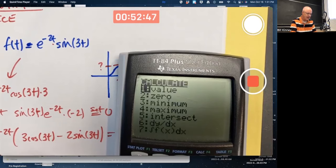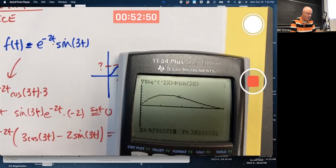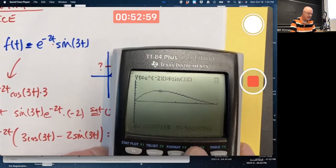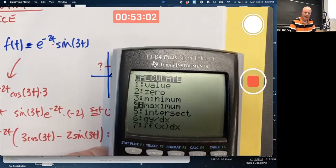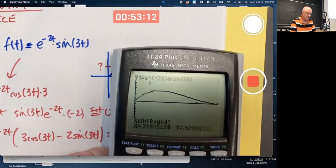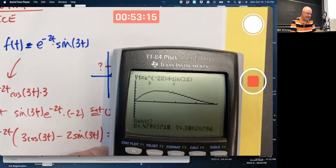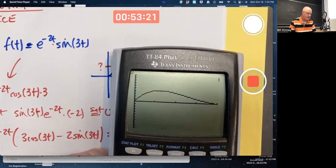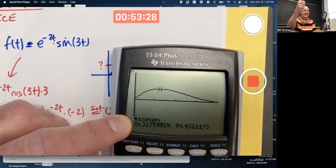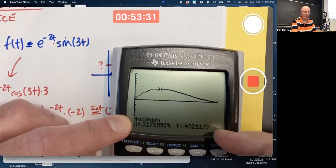We could try to find the maximum or we could just trace it to see if it looks like we're at the maximum. Where it looks like we are. Close to, yes, close to 0.3 something. 0.32. Is it really where the maximum is? Let's calculate it. Calculate maximum. Left bound, let's go over here. We want a number clearly to the left of that maximum location. Right bound. We want a number clearly to the right of it. And a guess somewhere in here. 0.3276. Yay! Look, right there. It's right.